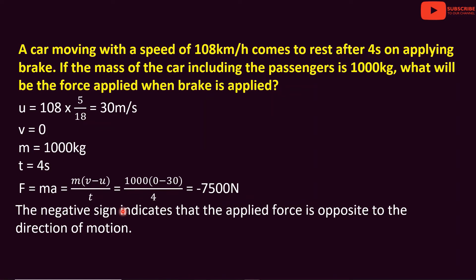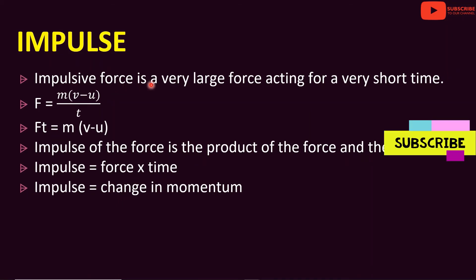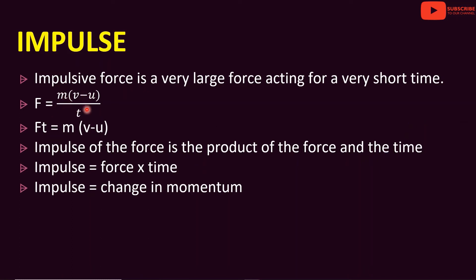The negative sign indicates that the applied force is opposite to the direction of motion. Now let's look at impulse force. In a short interval of time, applying a very large force is called the impulse force. The impulse force is a very large force acting for a short time. From Newton's second law, F equals m into (v minus u) divided by t. Cross-multiplying gives F into t equal to m into (v minus u). Force into time is equal to impulse.